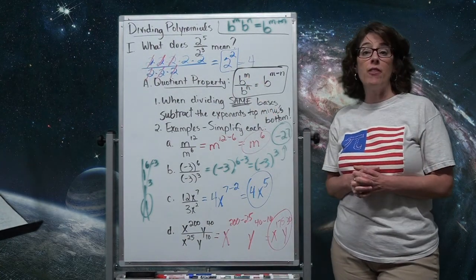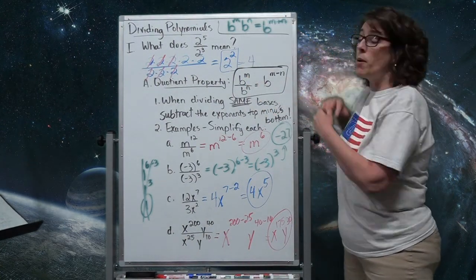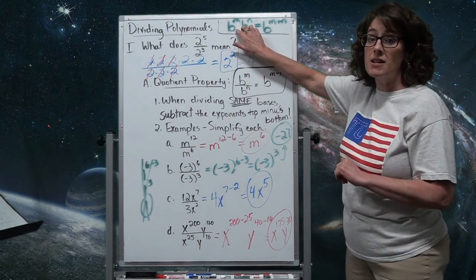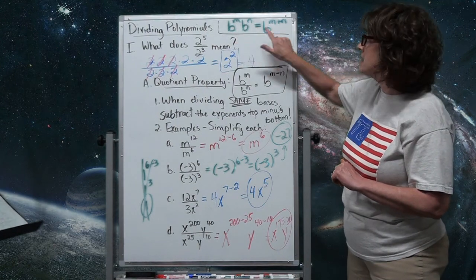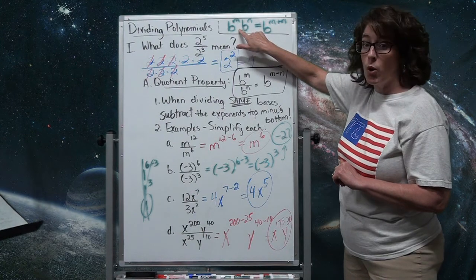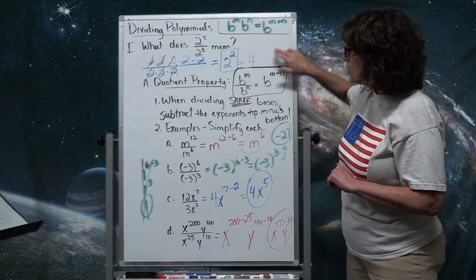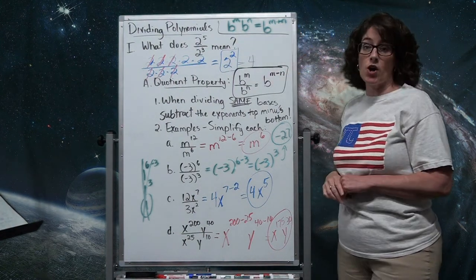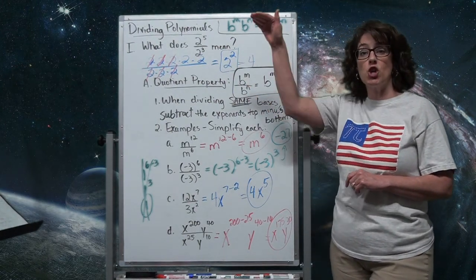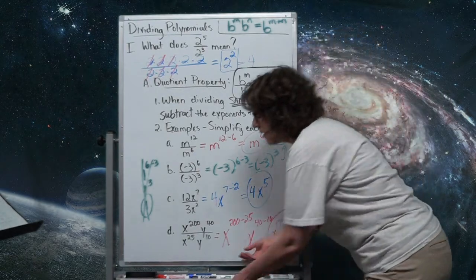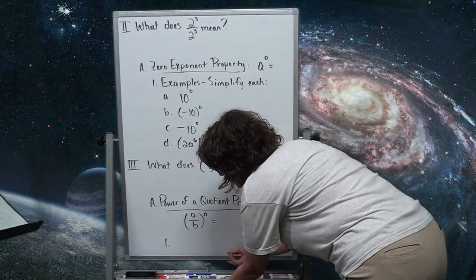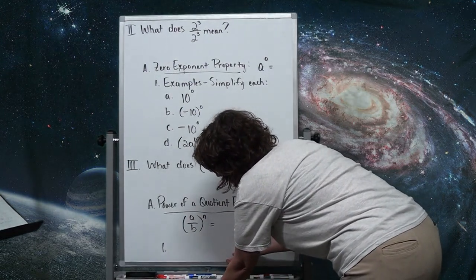So when you divide the bases with the same base, keep the base and subtract the exponents — very similar to the product property which says keep the base and add the exponents. Because division is the opposite of multiplication, we do the opposite of addition and subtract. Now let's look at another law of exponents: the zero exponent property.